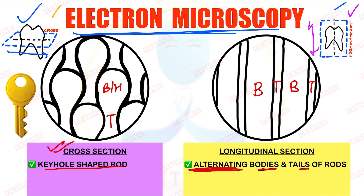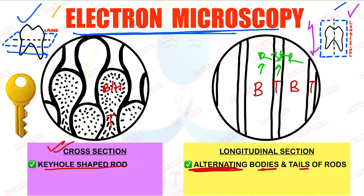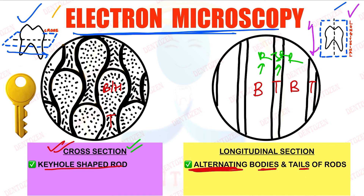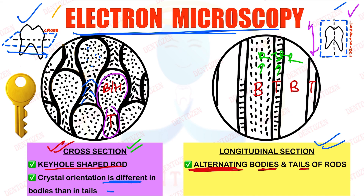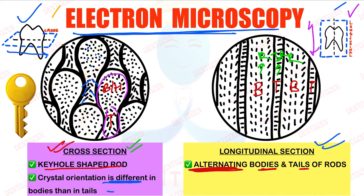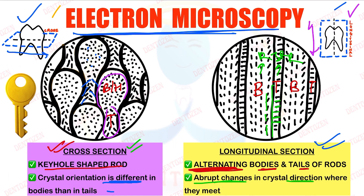In the longitudinal section, bodies are called rods and tails are called inter-rods, producing rods separated by inter-rods. Regarding crystal orientation in the cross section: crystals in the head part are oriented differently from those in the tail part. In the bodies they are arranged parallel, while in the tails they flare out. In the longitudinal section as well, crystals in bodies run in one direction, and in the tails they abruptly change direction — there is an abrupt change in crystal orientation where bodies and tails meet.